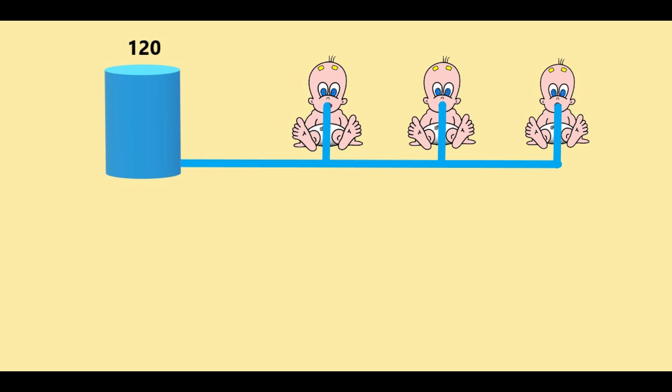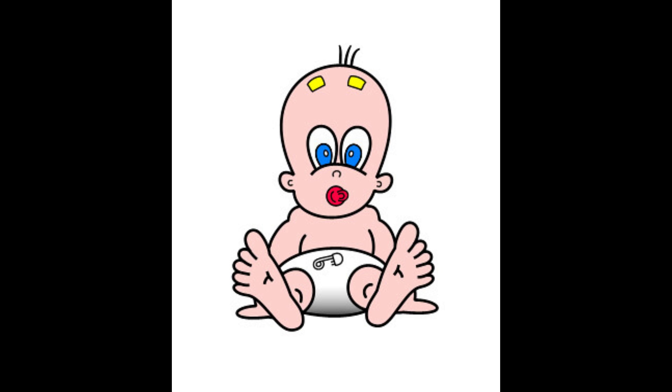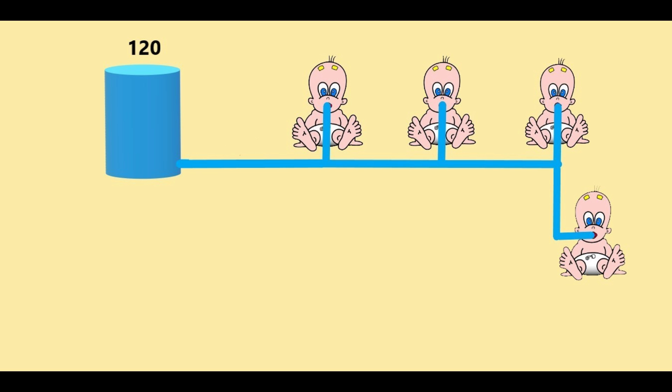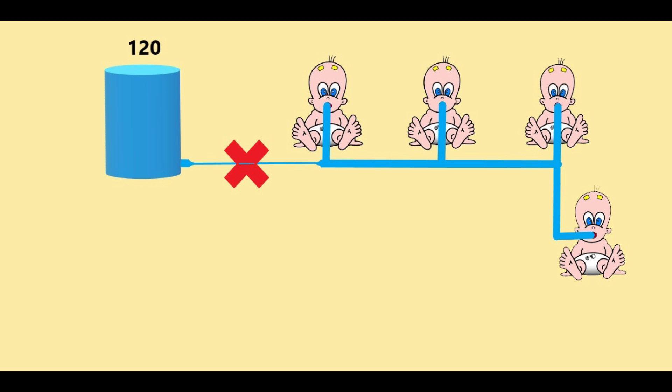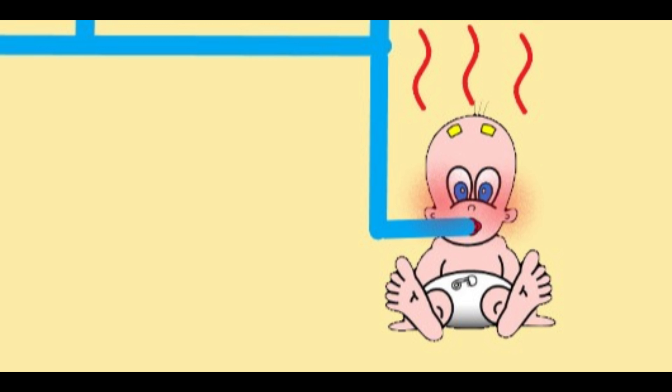This hose has just enough volume so that each of the babies is getting enough juice to keep them happy. One baby might need more juice than the other, but it doesn't matter. As long as the total juice they all need doesn't exceed what the hose can supply. Now what happens if we add another hungry baby to the hose? We were already at the limit of the juice being supplied, so this obviously isn't going to be good. In our example, the babies now suck so hard that the hose collapses. Not only that, but all the effort they are putting in trying to get enough juice causes them and the system to overheat.